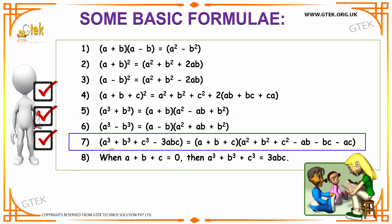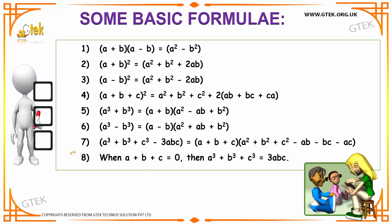A seventh formula says that a³ + b³ + c³ - 3abc is equal to (a + b + c)(a² + b² + c² - ab - bc - ac).